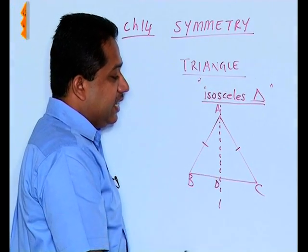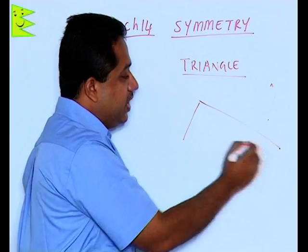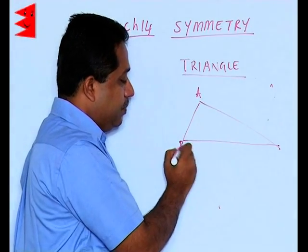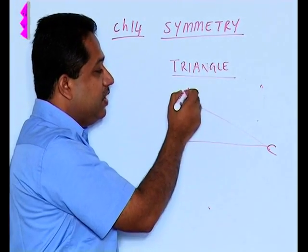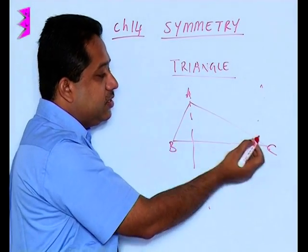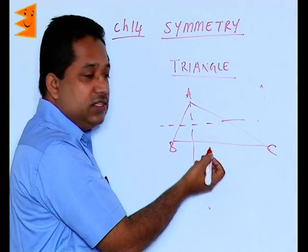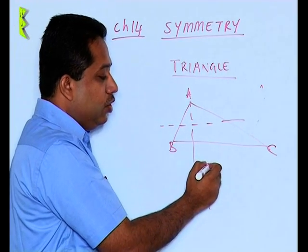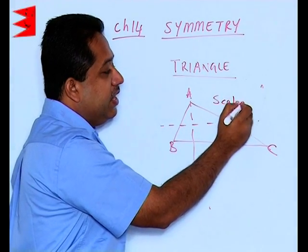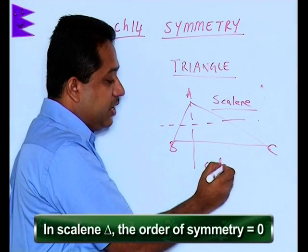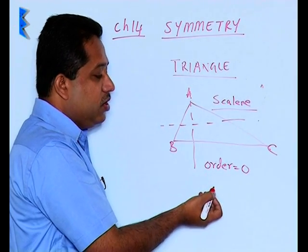What about a scalene triangle? In a scalene triangle, none of the sides are equal — all three sides of triangle ABC are of different dimensions. However we try to divide this, we find that one triangle is small and the other is big, or if we try to divide it horizontally, the portions will never coincide — they are unequal. So there is no symmetry for a scalene triangle, and the order of symmetry is 0. So we saw that in triangles itself, there are different orders of symmetry.